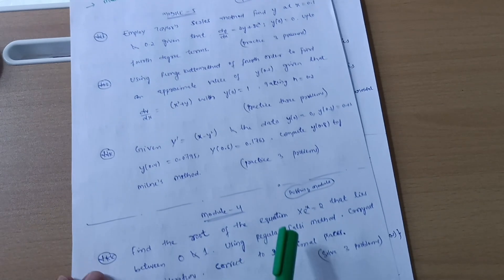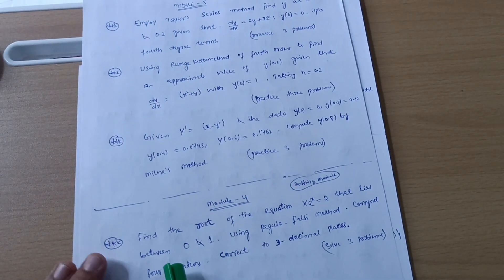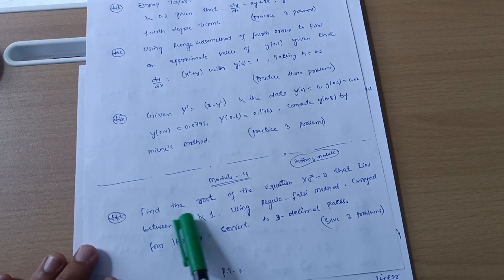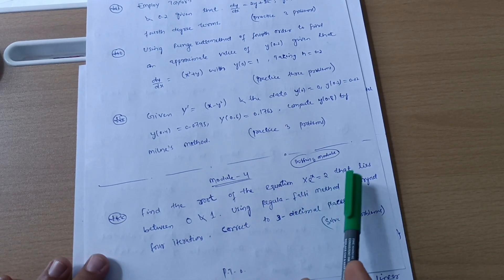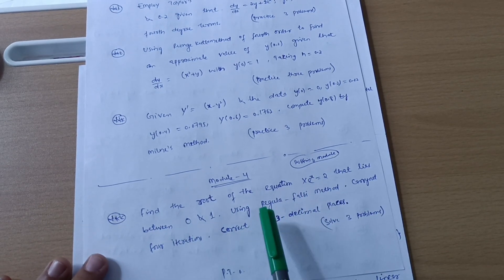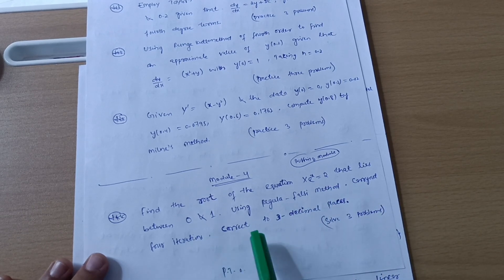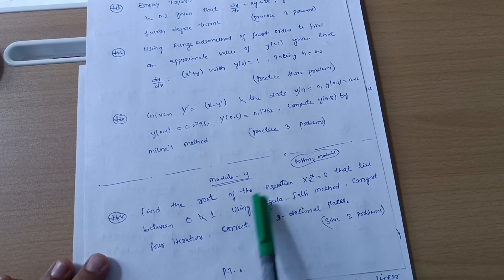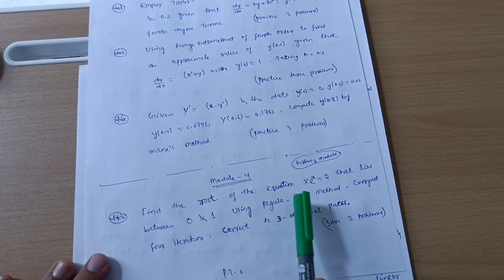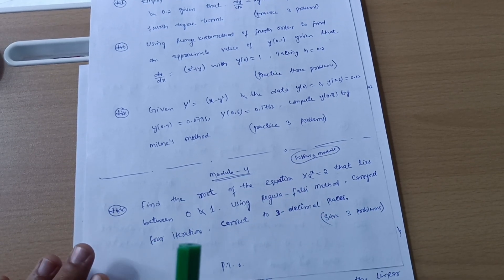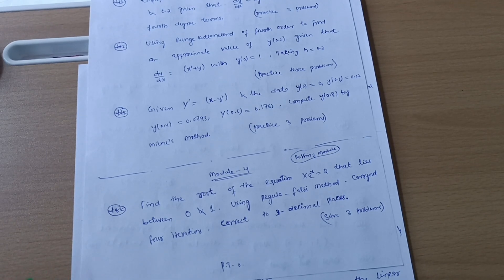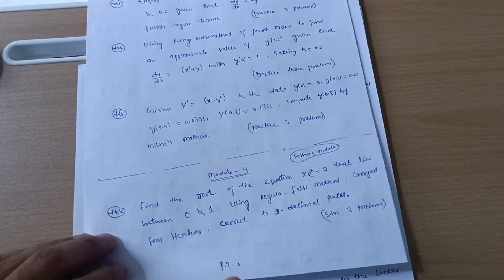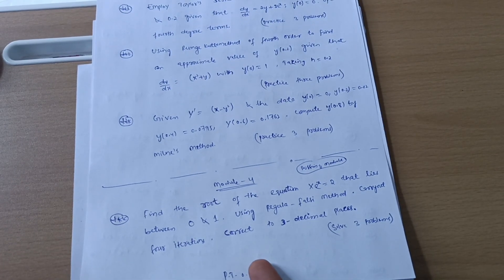The next passing module is Module 4. Here you have to cover the Regular Falsi method — for example, find the root of the equation xe^x = 2 that lies between 0 and 1 using the Regular Falsi method, carrying out four iterations corrected to three decimal places. Practice at least three problems on this method; three problems are enough to cover the concept so you can tackle any variety of problems in the examination.